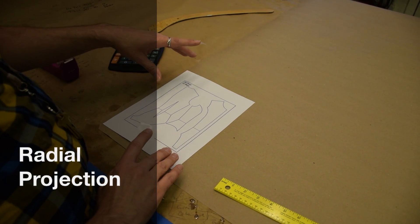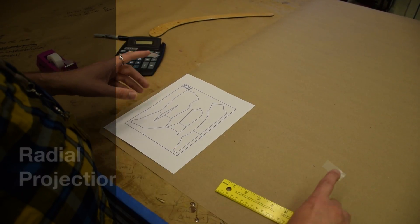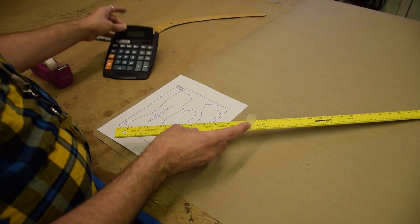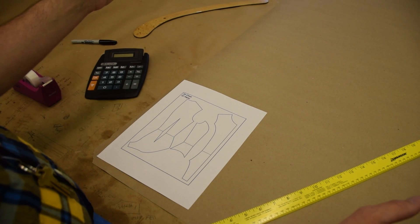So what I'm going to demonstrate here is a really old technique called radial projection. And it's a way to use just a ruler and a piece of paper and a calculator, if you're not great at math, to take a small pattern and enlarge it to the size you need.